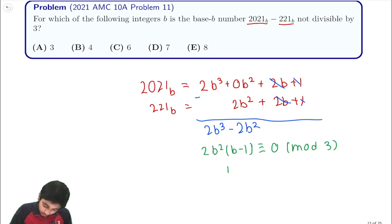Notice that if b is 0 mod 3, then b squared will be 0 mod 3, and our expression will also be 0 mod 3. If b is 1 mod 3, then b minus 1 will be 0 mod 3, and again, that will also be 0 mod 3.